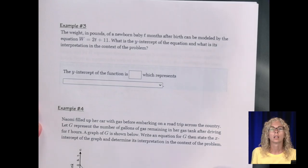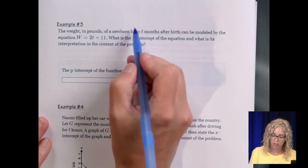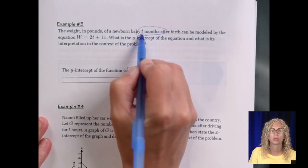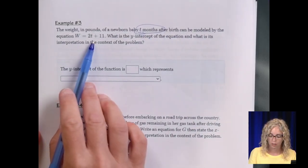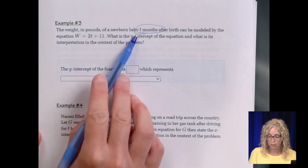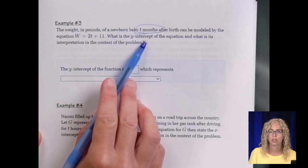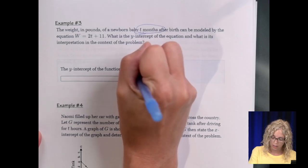Number 3. The weight in pounds of a newborn baby, t months after birth. So this is how much they weigh after, say, 2 months, 3 months, 4 months after they were born, modeled by the equation here. So the weight is positive 2 times the month after they were born, plus 11. What is the y-intercept of the equation? So the y-intercept of the equation is 11.